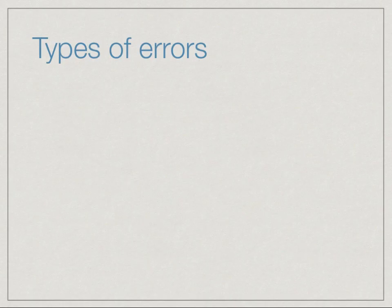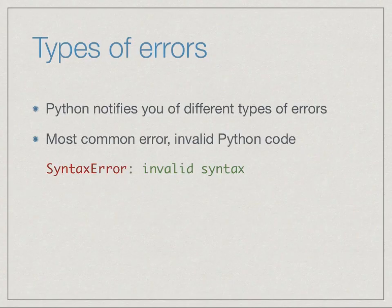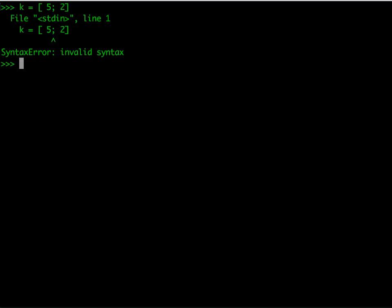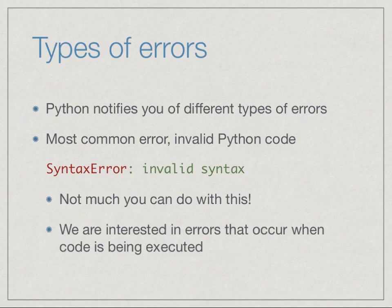There are many different types of errors. For example, when we run Python and type something which is syntactically wrong, we get something called a syntax error and Python gives us the message 'syntax error: invalid syntax'. For example, if we try to create a list and by mistake use a semicolon instead of a comma, Python immediately points to that semicolon and says this is a syntax error. Of course, if we have invalid syntax the program is not going to run at all. So what we are really interested in is errors that happen in valid programs — programs that are syntactically correct and that the Python interpreter can execute, but while the code is being executed some error happens.